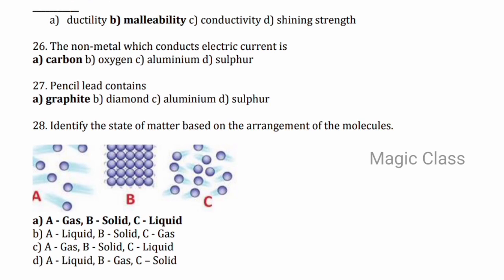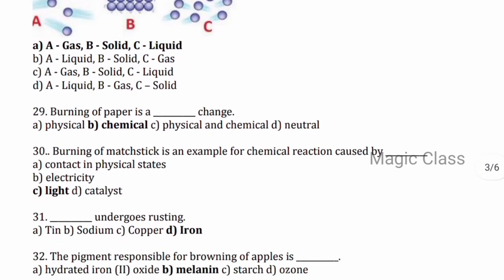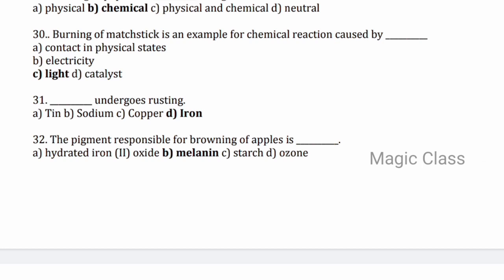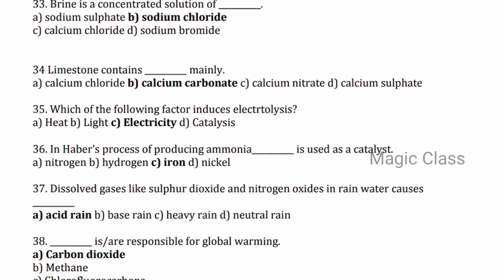Question 27 — pencil lead contains graphite. Question 28 — identify the state of matter based on the arrangement of molecules: option A is gas, B is solid, and C is liquid. Question 29 — burning of paper is a chemical change. Question 30 — burning of matchsticks is an example of a chemical reaction caused by light. Question 31 — iron undergoes rusting. Question 32 — the pigment responsible for browning of apples is melanin. Question 33 — brine is a concentrated solution of sodium chloride. Question 34 — limestone contains mainly calcium carbonate.